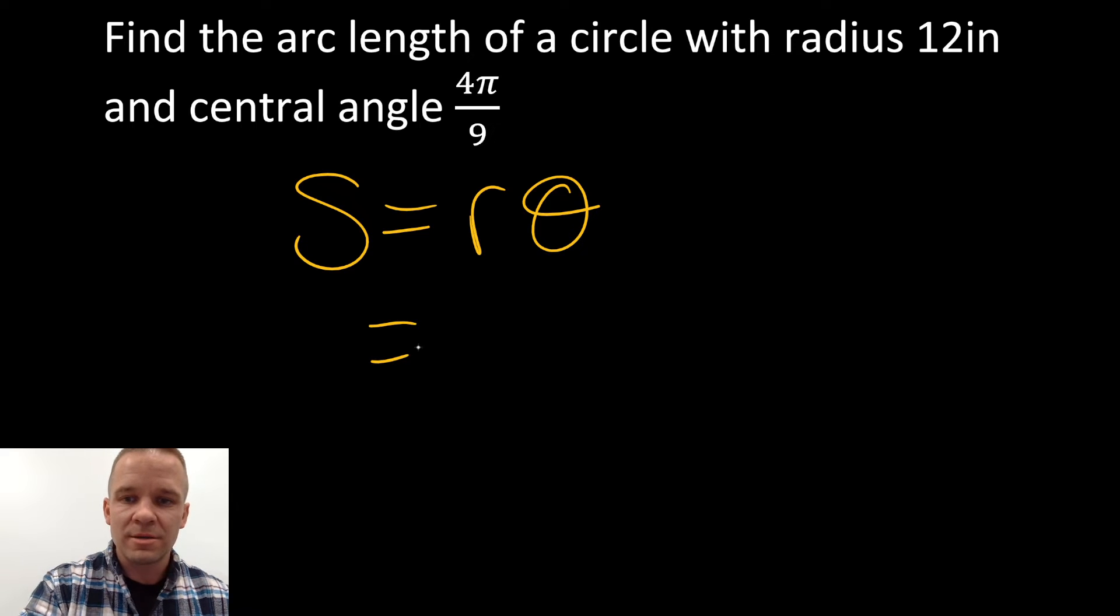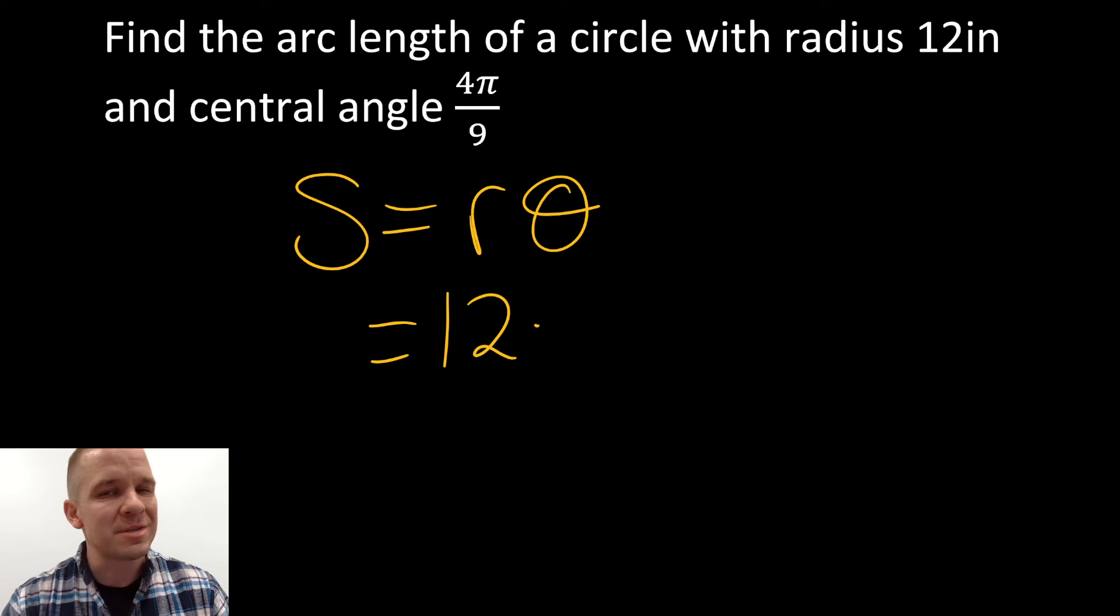Do I have my radius? Heck yeah, I do. Do I have my arc measure? It's the same as the central angle, if you do recall. Central angle and arc measure are the same. Boom, there's my θ.